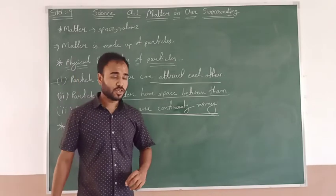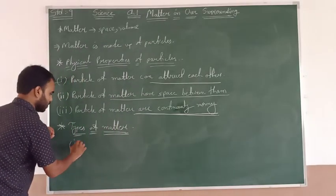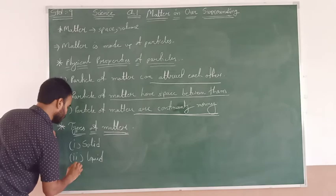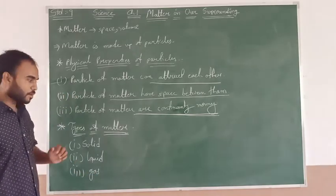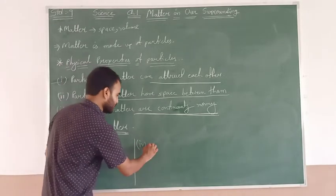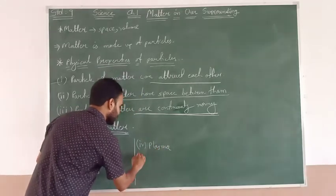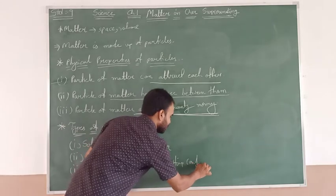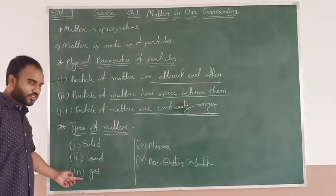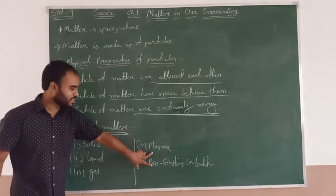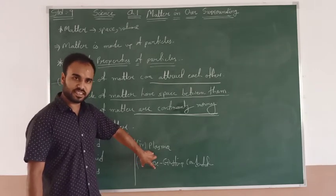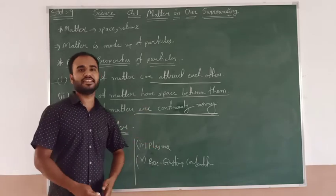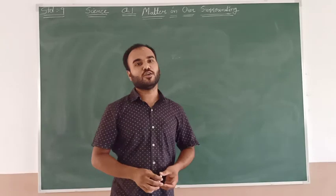Now we will look at the types of matter. There are five types of matter. We all know about solid, liquid, and gas. There are two more, but we will focus on solid, liquid, and gas in this particular chapter.